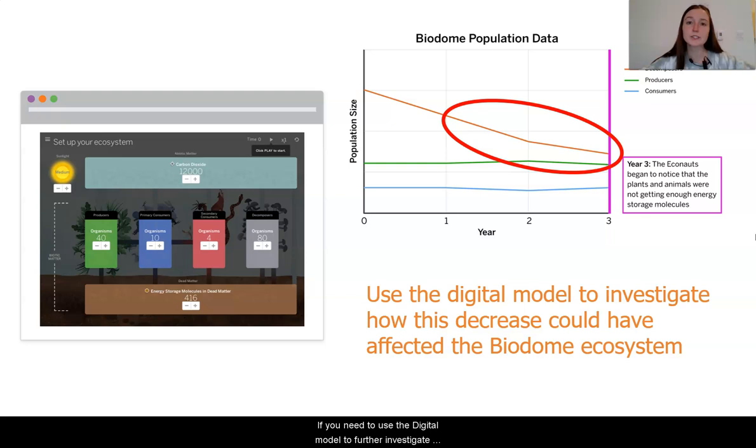If you need to use the digital model to further investigate what this data might mean, you can go ahead and do so. Use it as a tool to run different possibilities and understand what this decreasing decomposer population might have meant for the biodome. How could this have played a role in reducing carbon dioxide and therefore reducing the amount of energy storage molecules made?